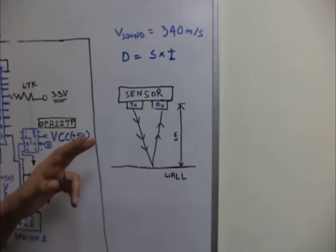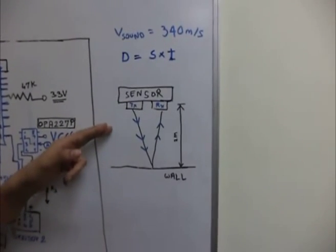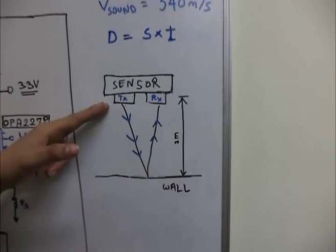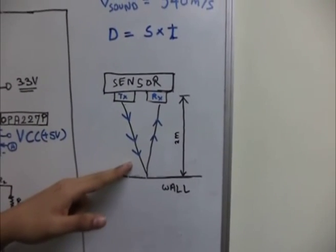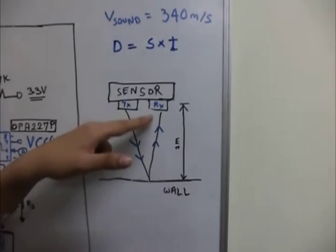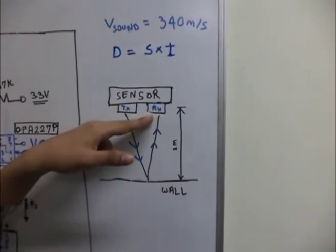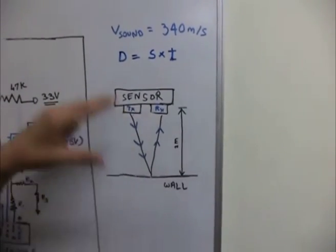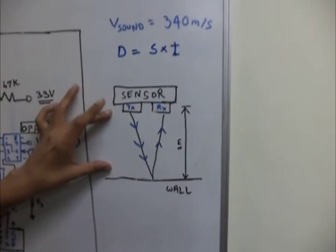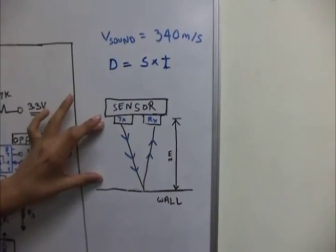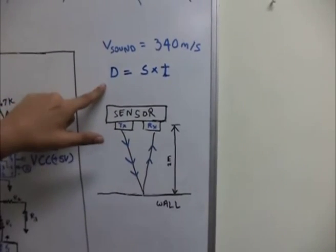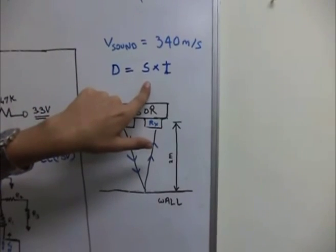The ultrasonic sensor works on the principle of transmitting ultrasonic sound. If an obstacle is present, the sound will be reflected back to the receiver. We measure the time taken by the sound to travel its path, and we find the distance of the obstacle by applying the formula: distance equals speed multiplied by time.